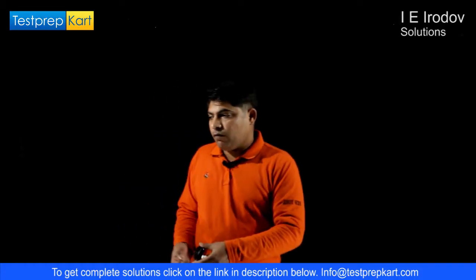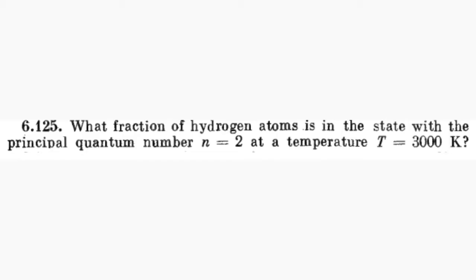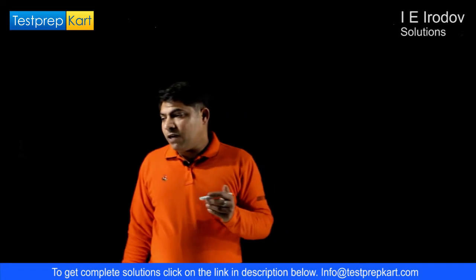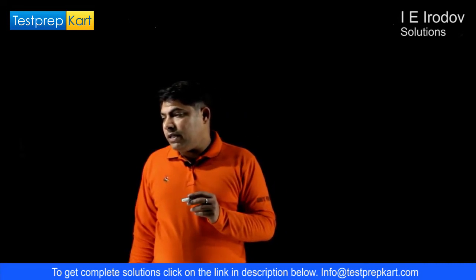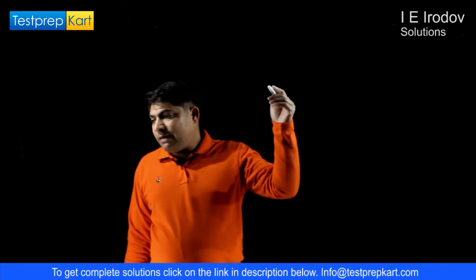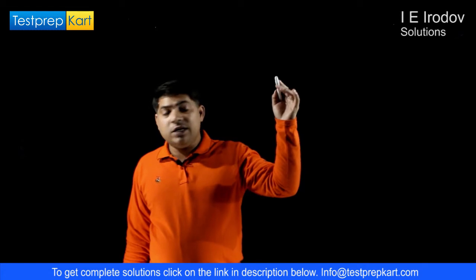Question number 6.125. What fraction of hydrogen atoms is in a state with the principal quantum number n equals 2 at temperature 3000 degree Kelvin?